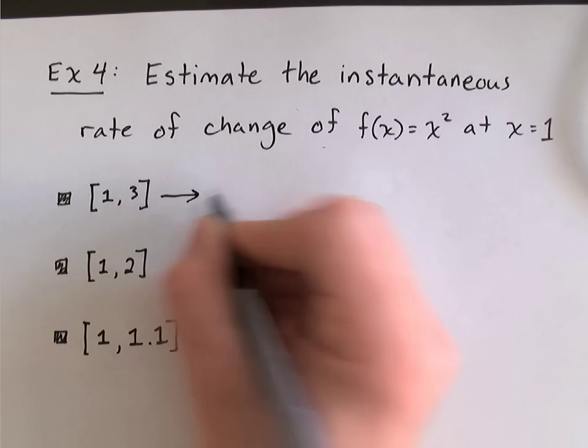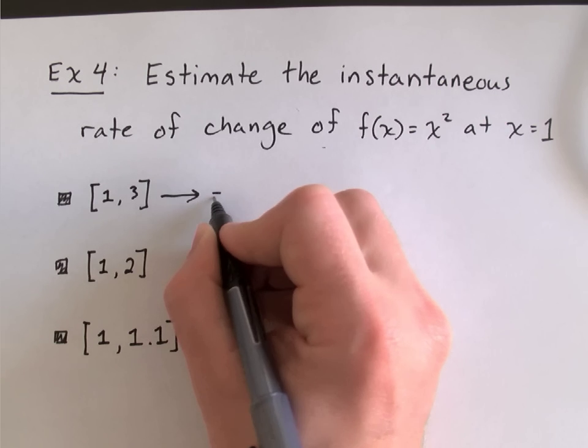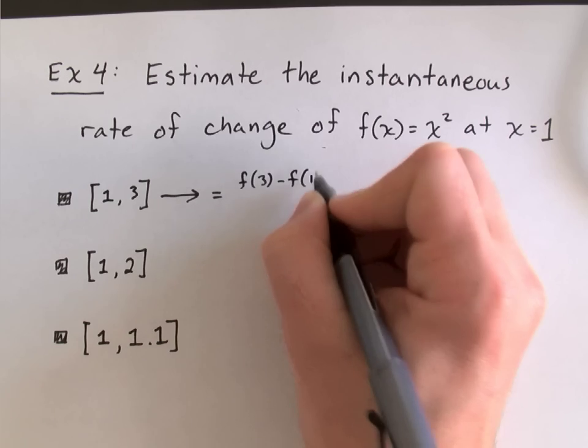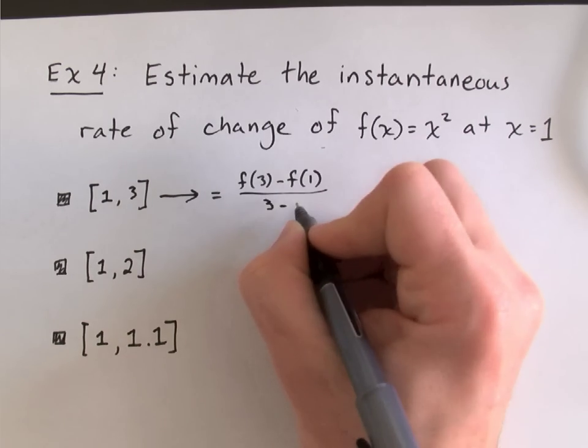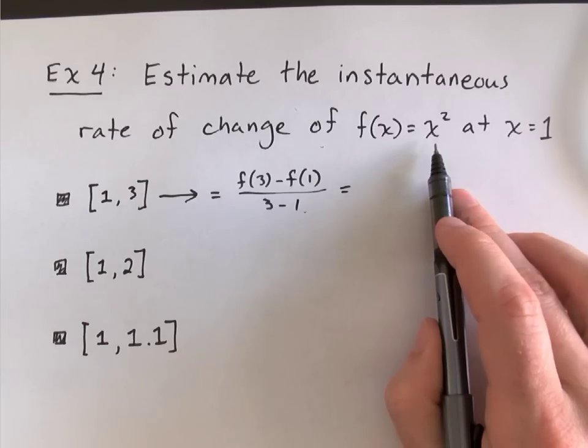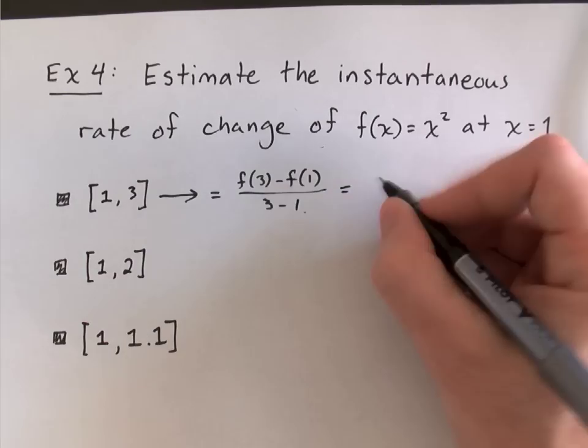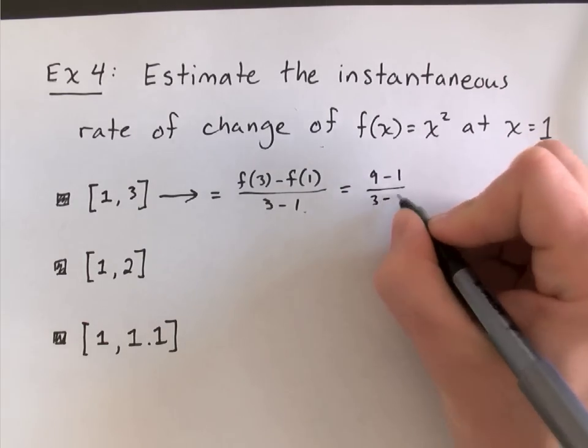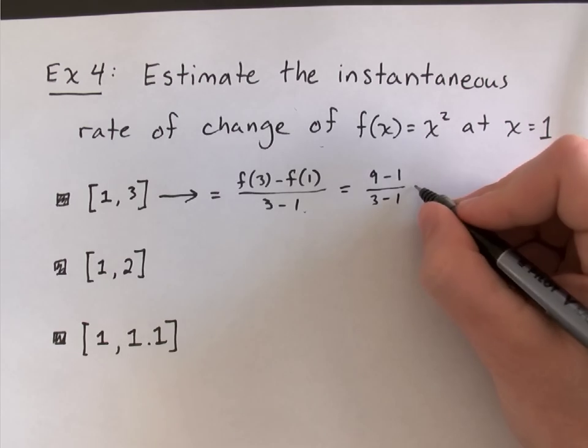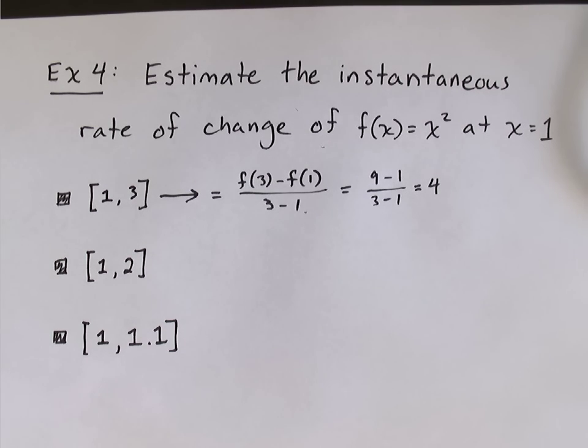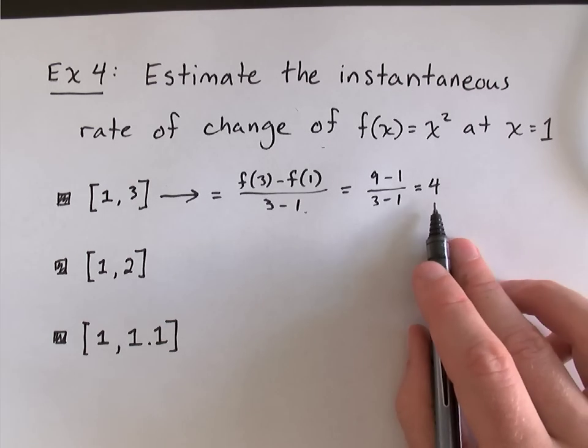So, for our first example, the average rate of change will be equal to f(3) minus f(1) over 3 minus 1. And since it's the square function, f(3) is 9. f(1) is 1 over 3 minus 1, and that's 8 over 2, which is 4. So, with my first estimate, I could say the instantaneous rate of change is about 4. Let's see if we can do better.